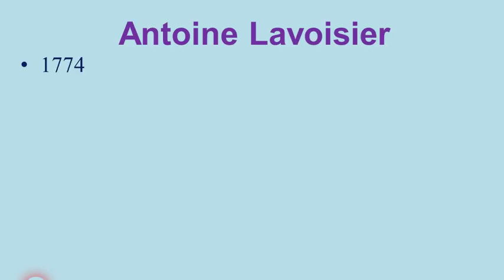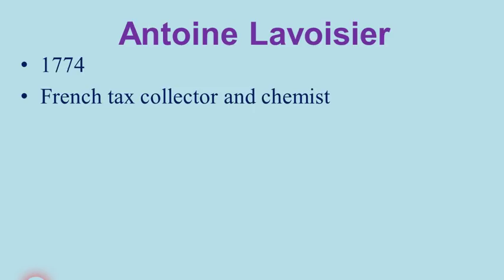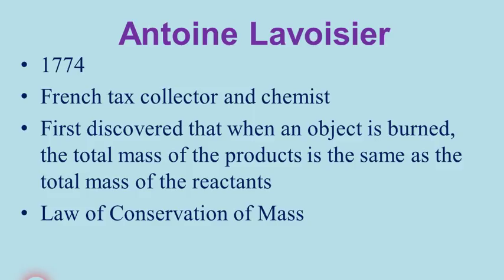Fast forward to the year 1774. A French tax collector named Antoine Lavoisier was also a chemist who spent his spare time mixing, reacting, and burning things. He built an impressive laboratory and commissioned some of the most precise measuring instruments of his time. Lavoisier discovered that when something is burned, the total mass of the products — the ash, the smoke, the vapors — is exactly the same as the total mass of the reactants. This is called the law of conservation of mass, sometimes called Lavoisier's law.